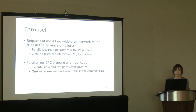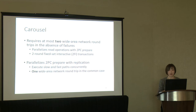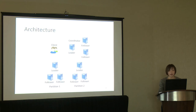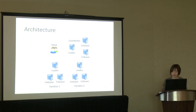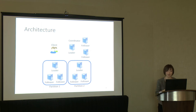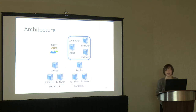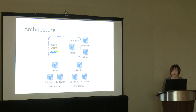This allows Carousel to complete many transactions in just one wide area network roundtrip. The architecture of Carousel is very similar to a Spanner-like system — it also has data partitions. For each partition, instead of using Paxos, Carousel uses Raft to provide fault tolerance. We also have a fault-tolerant coordinator to manage the 2PC protocol. Additionally, Carousel requires the client, which is usually an application, to be co-located with the coordinator.